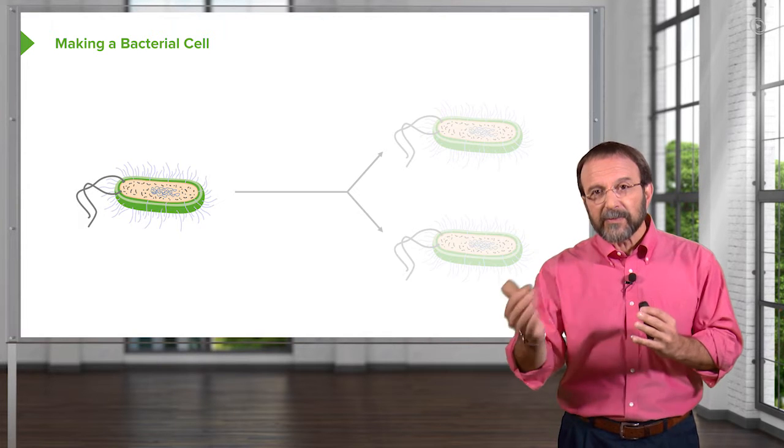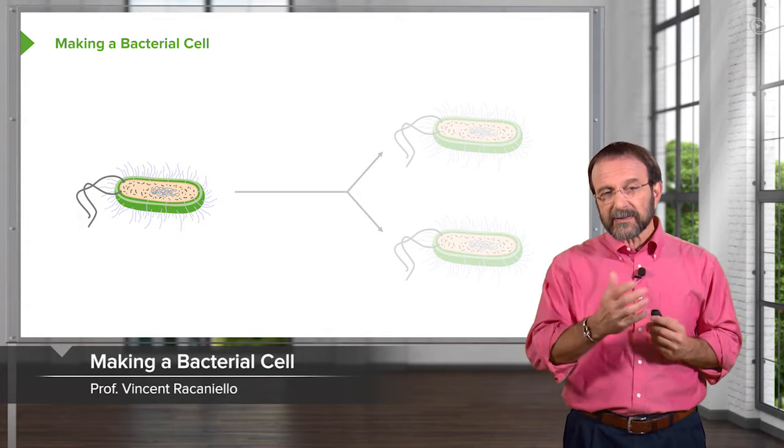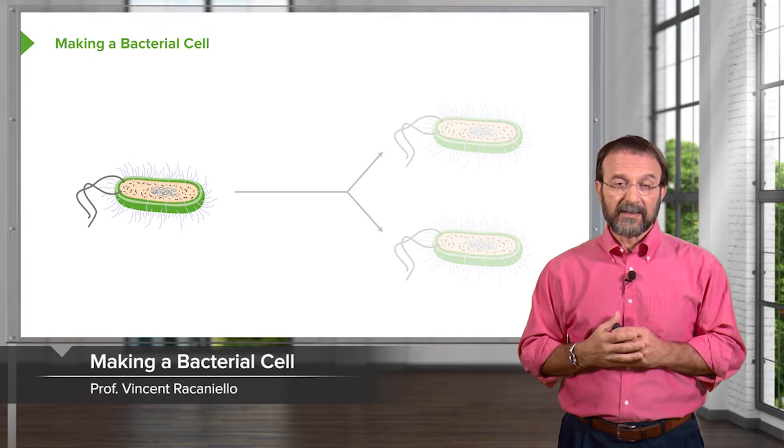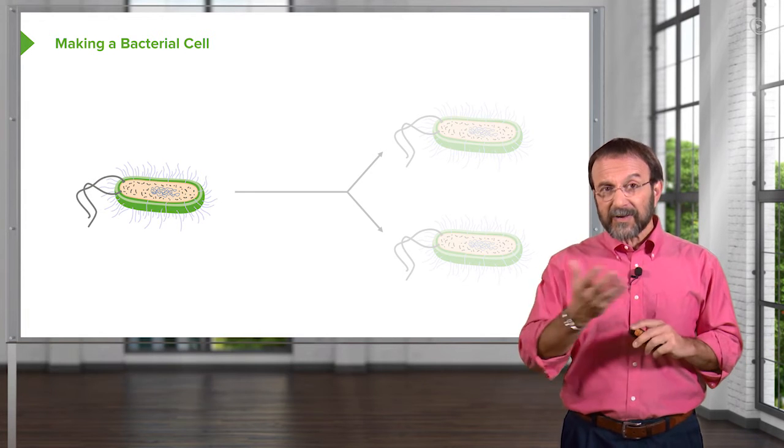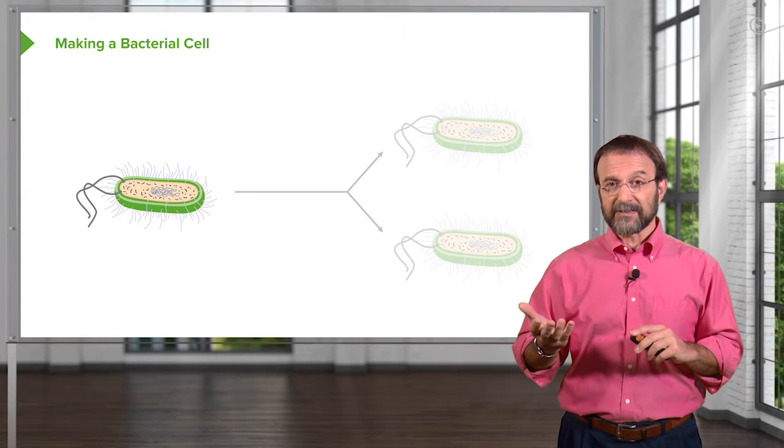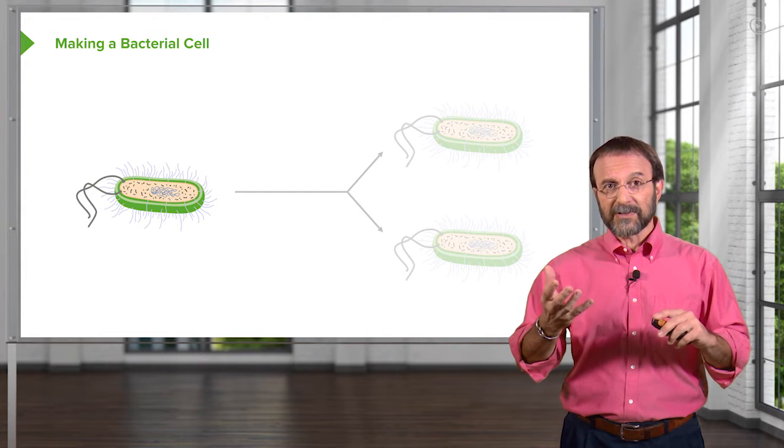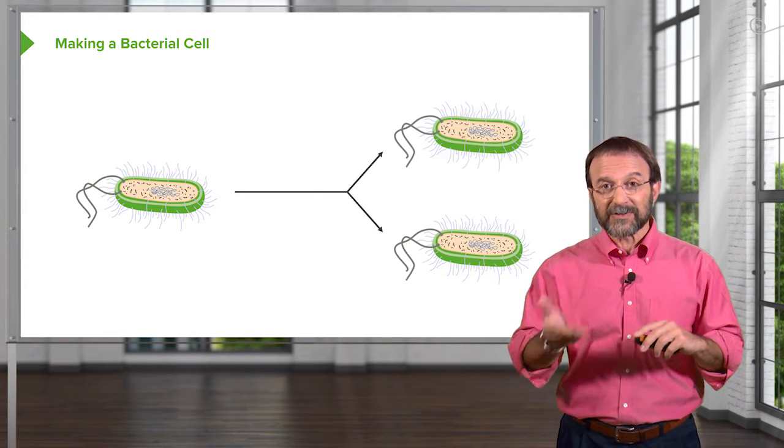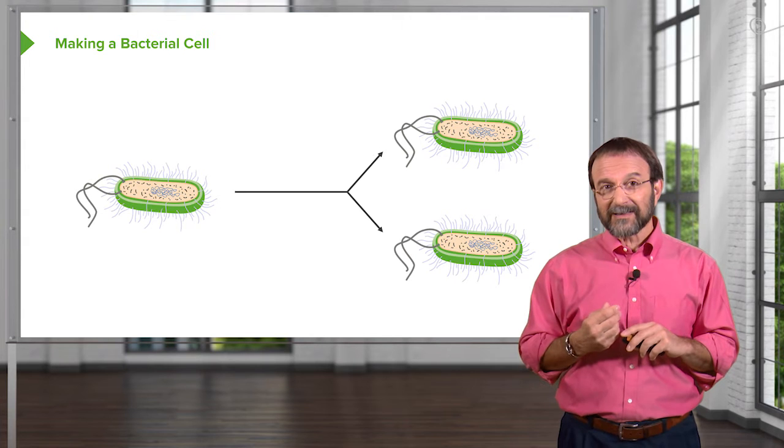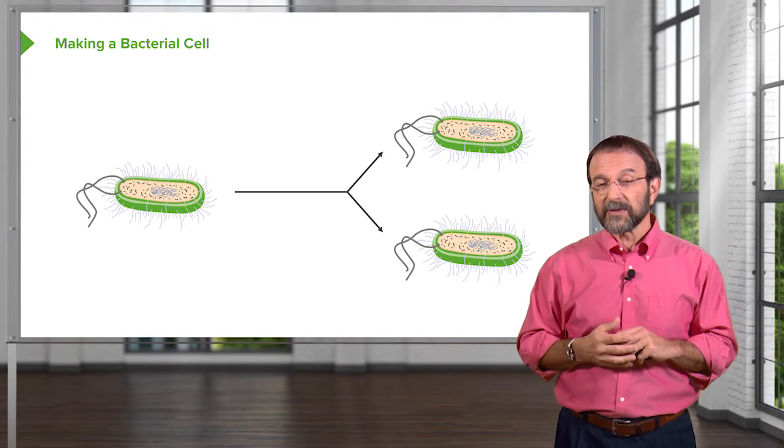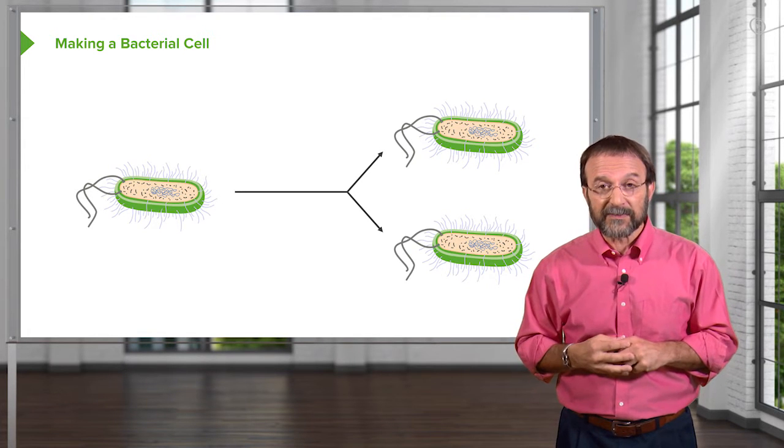Let's talk a little bit about how you make new bacterial cells. We've focused so far on a single cell, but how do you get more? Well, the strategy for bacteria is pretty simple. That cell grows and grows, and it splits into two. So we start with one bacterial cell, we end up with two. That is called binary fission.